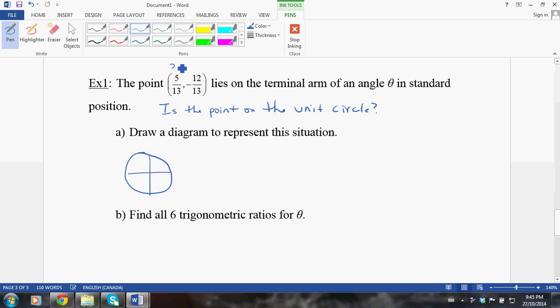So, how do we figure that out? Well, you remember that x squared plus y squared is equal to 1. So, if this is the x value and this is the y value, if it does indeed lie on the unit circle, then this would be a true statement. So, let's just check this out. 5 over 13 squared plus negative 12 over 13 squared. Is this equal to 1? 5 squared is 25 over 13 squared is 169 plus 144, that becomes positive over 169. Is that equal to 1? 25 plus 144, yes, is 169. So, it's true. So, it does lie on the unit circle.